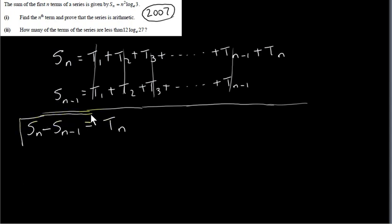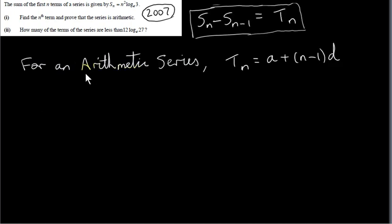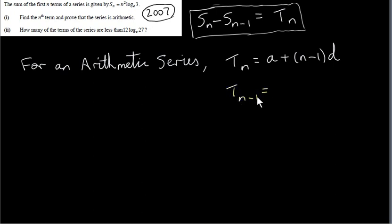Now I want to talk about a specific type of series — an arithmetic series. The general term is tₙ = a + (n−1)d, as covered in the first video. If tₙ is given by this, then tₙ₋₁ — the term previous to tₙ — is obtained by replacing n with n−1, giving n−1−1 which is n−2.